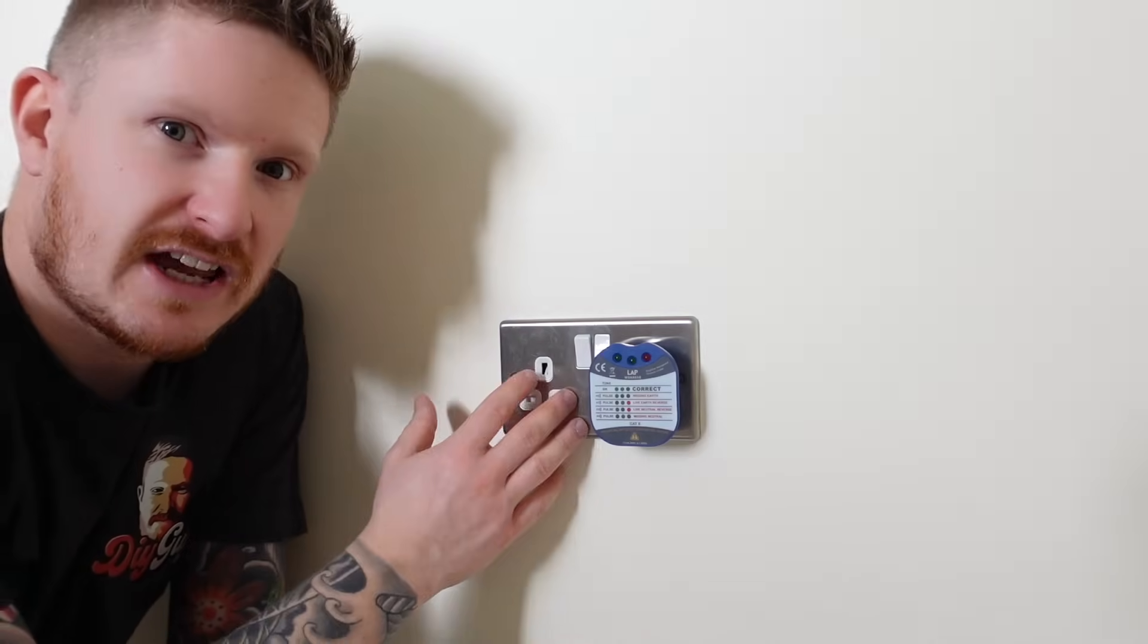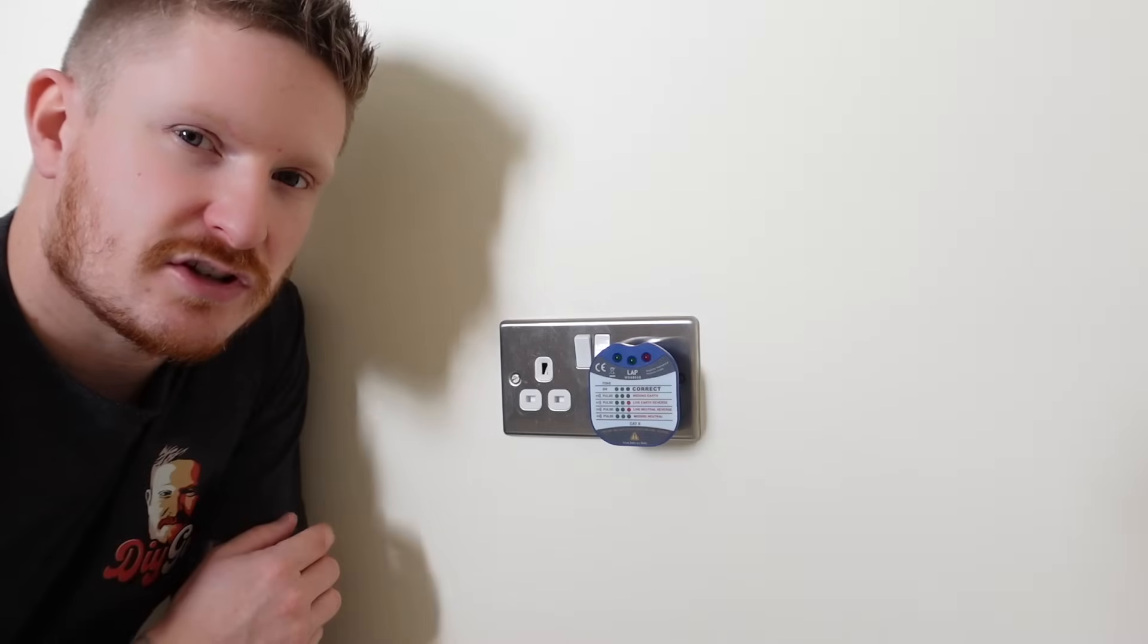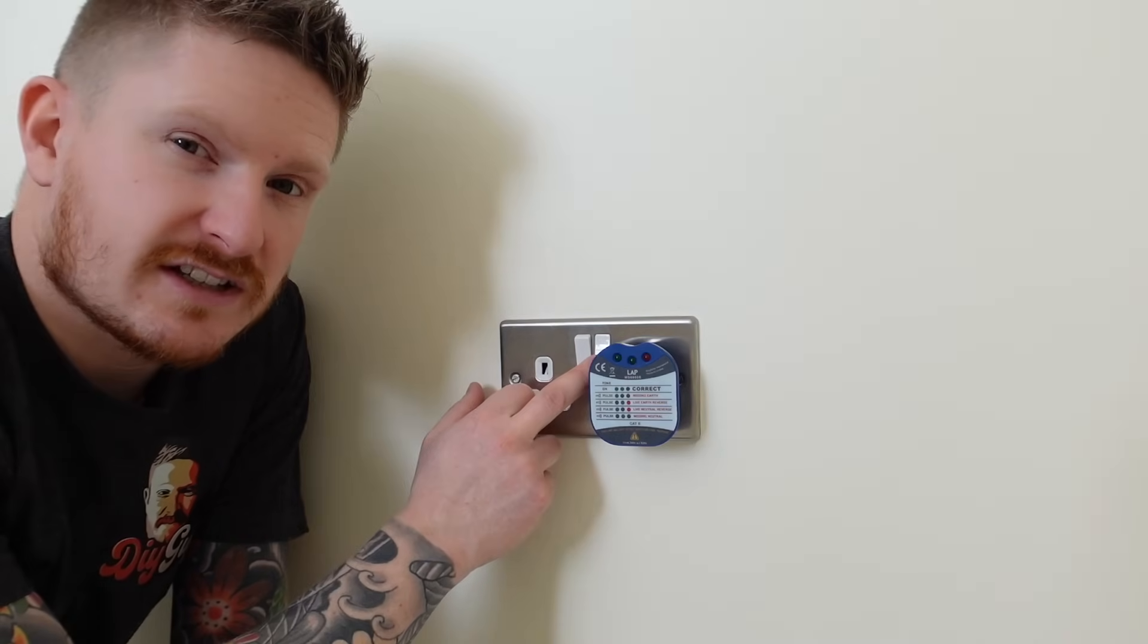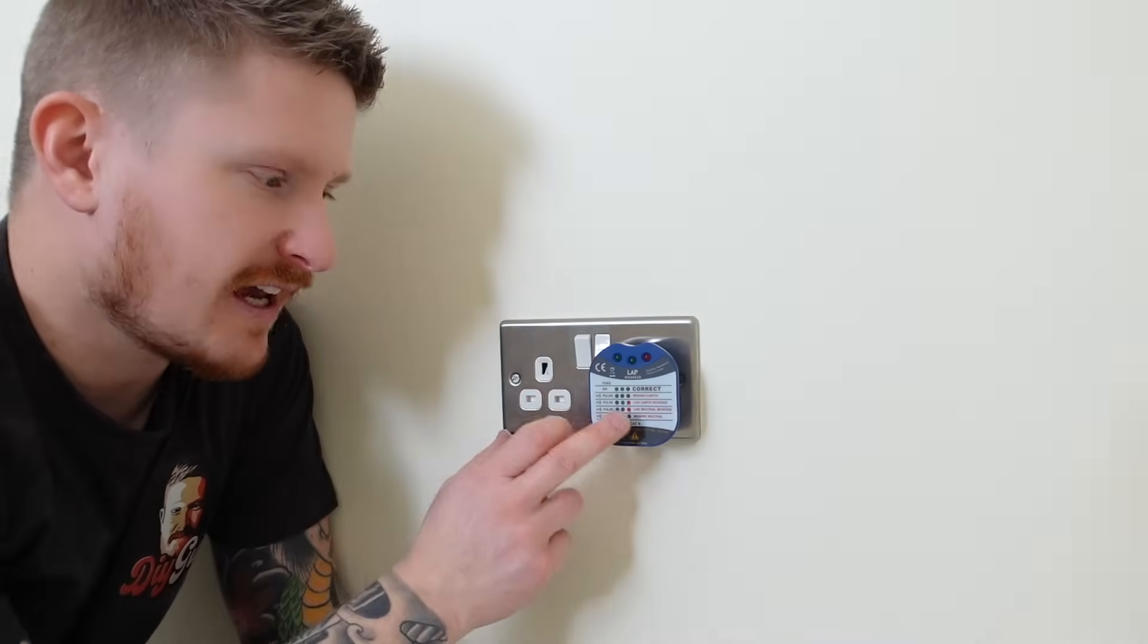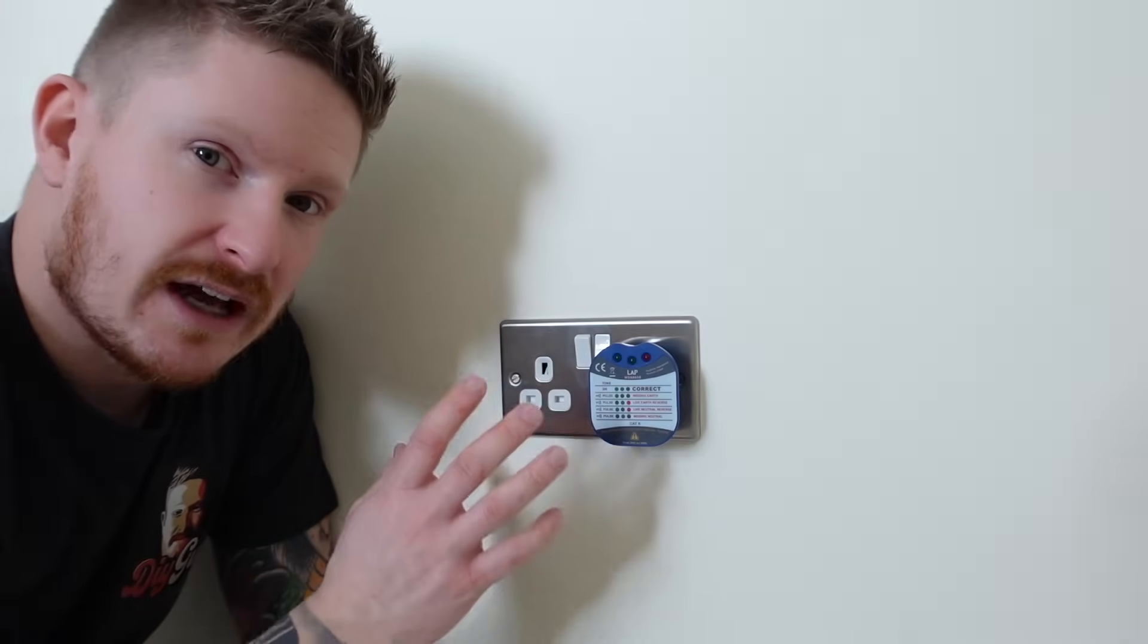Now we need to make sure that we're safe to work on the socket. Let's head over to the consumer unit and we will turn off the power to the circuit that this socket is on. You need to leave your socket tester turned on and because they're quite loud in some cases you'll be able to hear the tone from your consumer unit so you'll know when the power goes off.